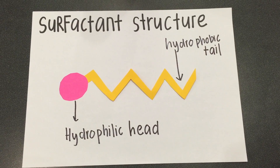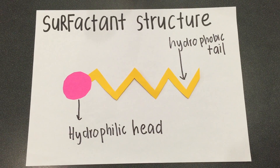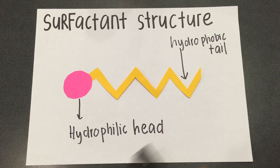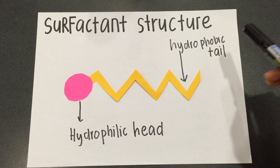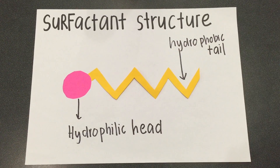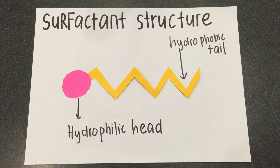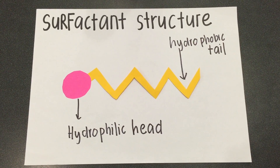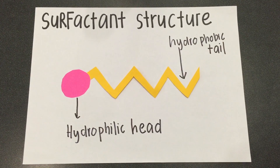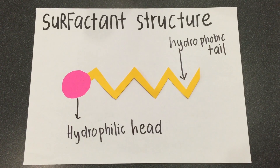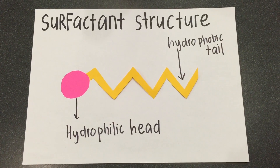Surfactant is composed of a hydrophilic head and a hydrophobic tail. The hydrophilic head is normally attracted to water molecules, while the hydrophobic tail diffuses into fats and oils.